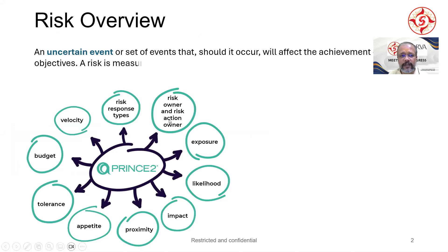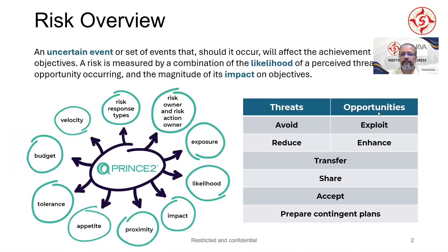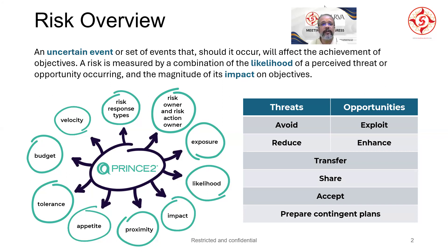Let's start with a risk overview. The definition of risk says: an uncertain event or set of events that, if it should occur, will affect the achievement of objectives. Every project has objectives, goals, outputs to be delivered, and outcomes to be achieved. There could be uncertain events that may or may not occur — that's the probability. If they occur, they affect your achievement of objectives in a positive or negative way. A risk is measured by the likelihood of a perceived threat or opportunity occurring and the magnitude of its impact on objectives.